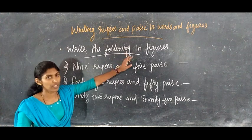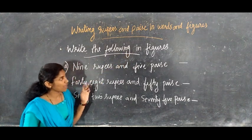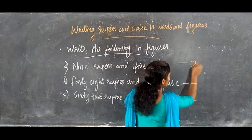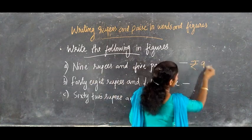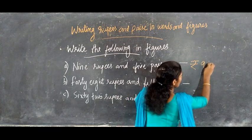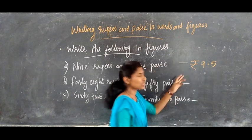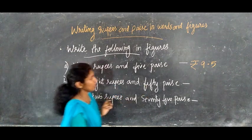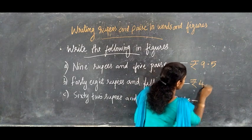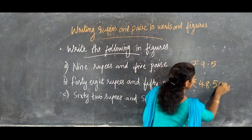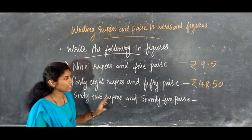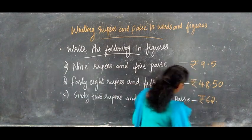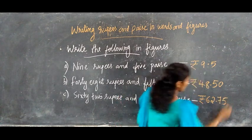Let's do some questions. Write the following in figures. A: 9 rupees and 5 paisa — we write the rupee symbol, then 9, put one dot, then 5 paisa, giving ₹9.05. B: 48 rupees and 50 paisa — we write 48, put one dot, then 50 paisa, giving ₹48.50. C: 62 rupees and 75 paisa — we write 62, put one dot, then 75 paisa, giving ₹62.75.